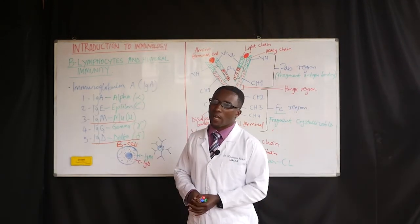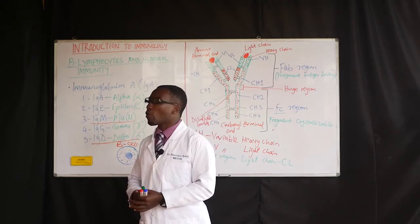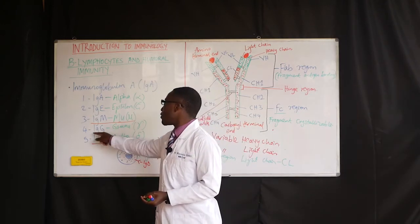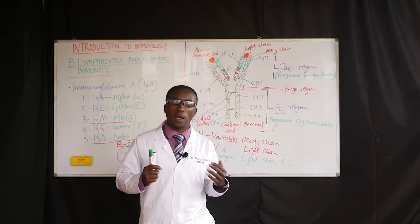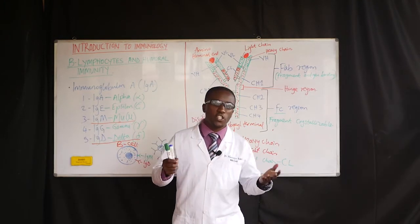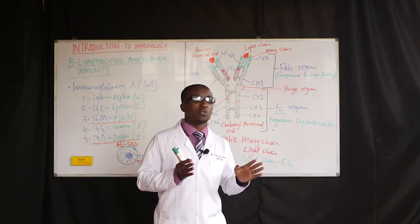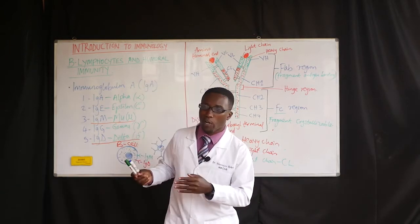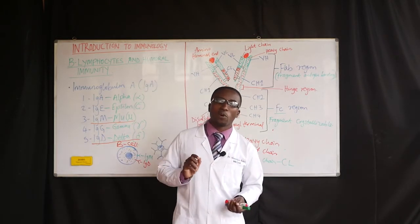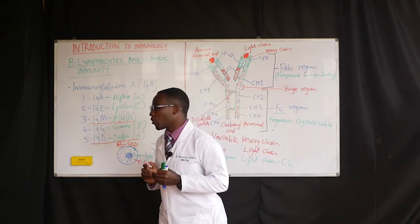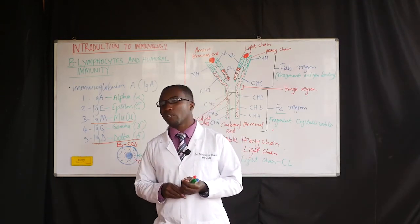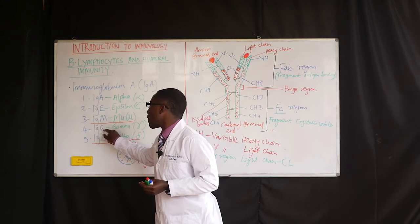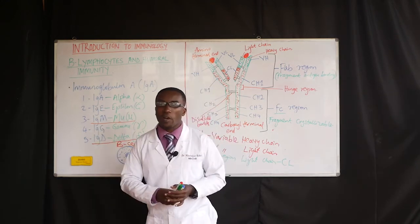Allow me to take you to another isotype of antibodies — immunoglobulin G, immunoglobulin gamma, IgG. Not the inspector general of government — here in immunology, IgG refers to immunoglobulin gamma. Our IgG comprises about 85% of the total immunoglobulins in adults.